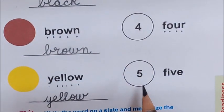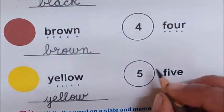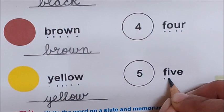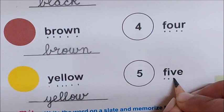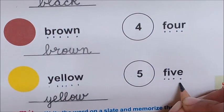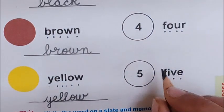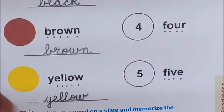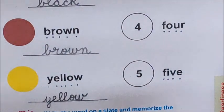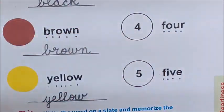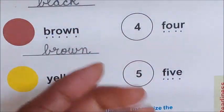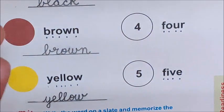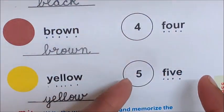Go to the last number name now: F-I-V-E, 5. And this is number five. Clap and say F-I-V-E, 5.